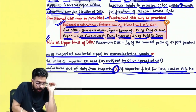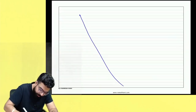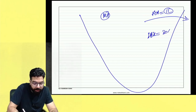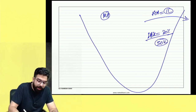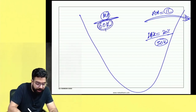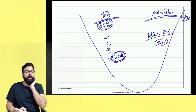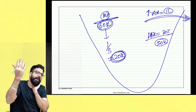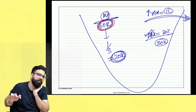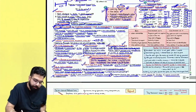Rule 9 covers the upper limit of duty drawback. The maximum duty drawback is one-third of the market/wholesale price of the exported goods. For example, if FOB is 1 lakh rupees and duty drawback rate is 30%, you'd normally get 30,000 rupees. But if the domestic market price is only 60,000 rupees, the maximum duty drawback is one-third of 60,000 = 20,000 rupees. This prevents people from inflating FOB values to get more duty drawback.